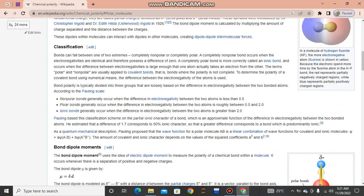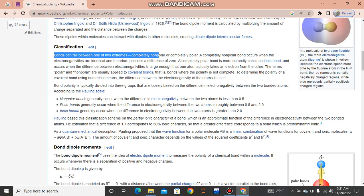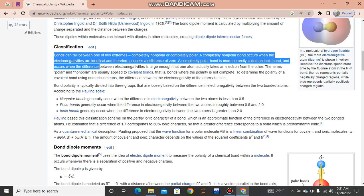Classification: Bonds can fall between one of two extremes—completely nonpolar and completely polar. A completely nonpolar bond occurs when the electronegativities are identical and therefore possess a difference of zero. A completely polar bond, more correctly called an ionic bond, occurs when the difference between electronegativities is large enough that one atom actually takes an electron from the other. The terms polar and nonpolar are usually applied to covalent bonds, where the polarity is not complete.